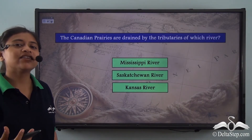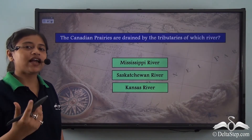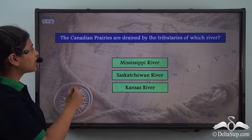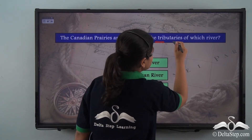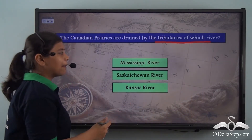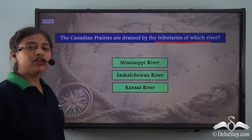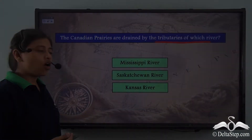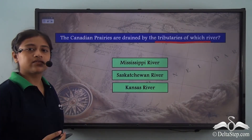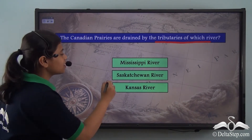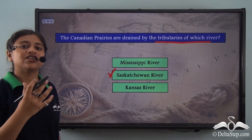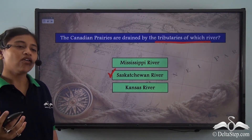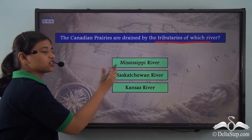Before we proceed, here is a question: the Canadian Prairies are drained by the tributaries of which river — the Mississippi River, the Saakshuan River, or the Kansas River? The correct answer is the Saakshuan River. The Canadian Prairies are drained by the tributaries of the Saakshuan River.